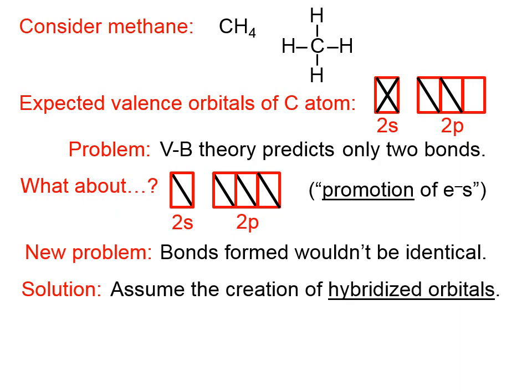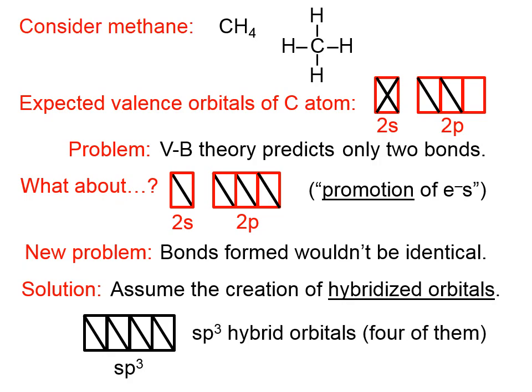We're going to assume the creation of hybridized orbitals. What we're going to do is we're going to take this 2S orbital and this 2P orbital, and we're going to mix them together. When we're done, we're going to have four new orbitals, and each one is called an SP3 orbital, an SP3 hybrid orbital, because each one was formed with the input of one S orbital and three P orbitals.